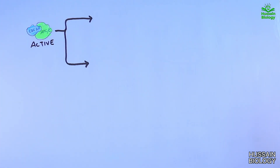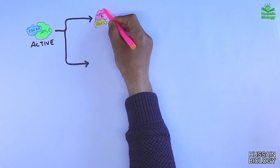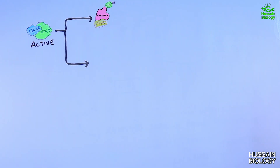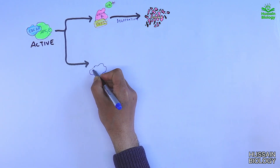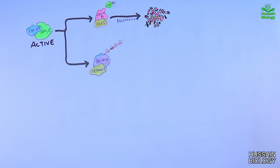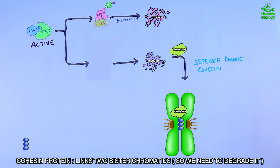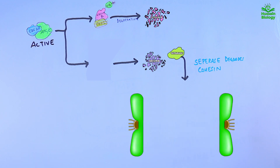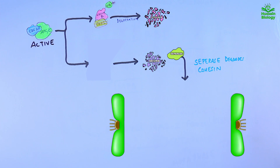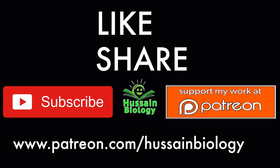Now let's see how APC and CDC20 mediate the transition. First, APC mediates the ubiquitination of cyclin B protein, leading to its degradation and inactivation. Next, APC also ubiquitinates securin protein, mediating its degradation, which leads to activation of separase. This separase then degrades the cohesin protein, breaking the link between sister chromatids and initiating anaphase — this is how we get the transition from metaphase to anaphase.